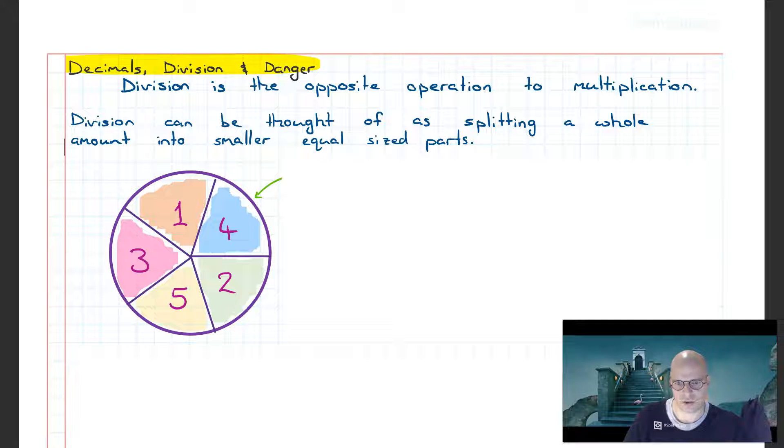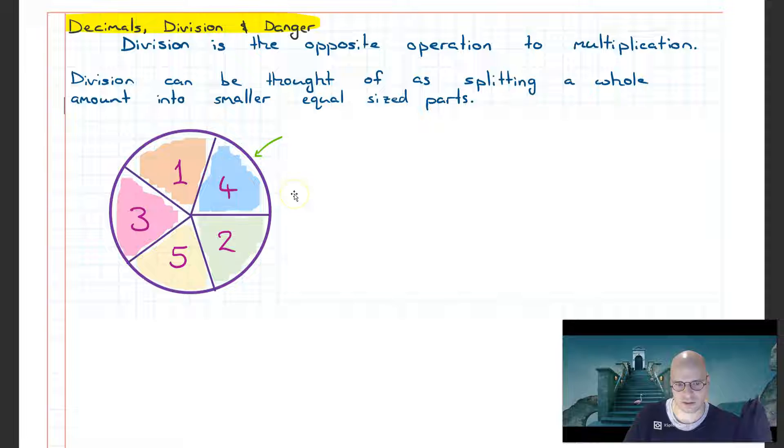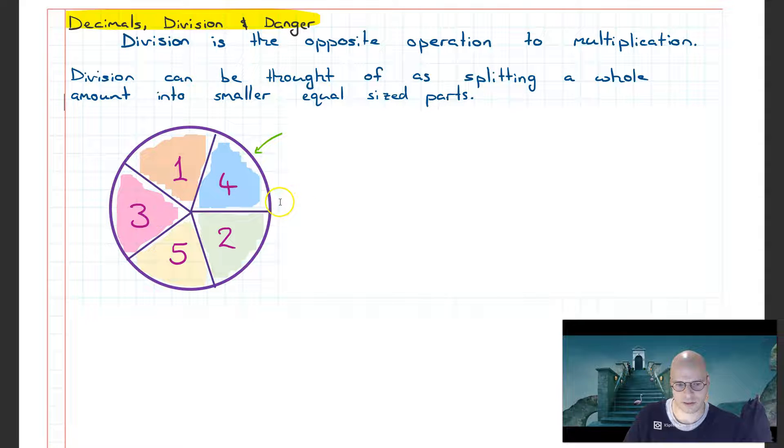In this video we're going to look at how we can divide a decimal number by an integer. Division can be thought of as the opposite operation to multiplication, or as splitting a whole amount into equal sized smaller amounts. This is visualized with the circle here, where the whole amount is split into five equal portions.